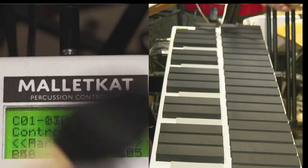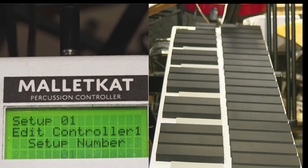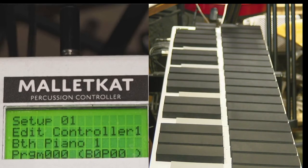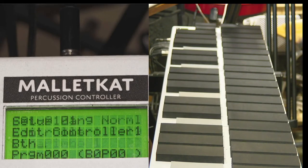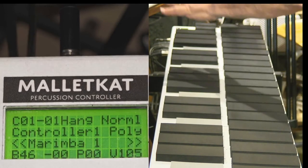Now if I go to the next step, it jumped to user kit number 1, which happened to send out a program change of zero, so don't get confused with setups, and programs, and chain.